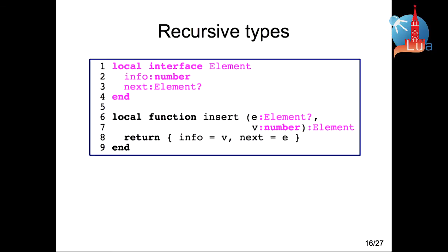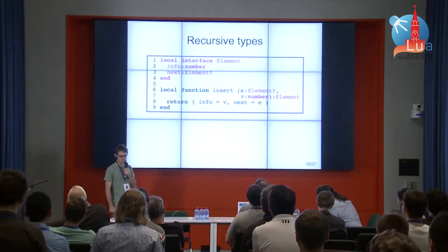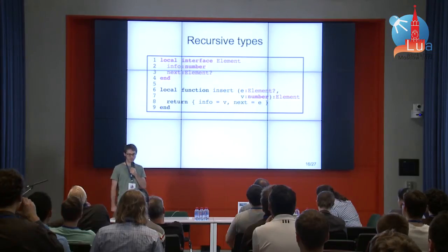Using interfaces, we can also declare recursive types. Like in this example, we are declaring a type for linked lists and using the type 'element' to define a function that inserts an element at the beginning of the list. Notice that we have to annotate the return type of insert because TypedLua cannot infer recursive types.